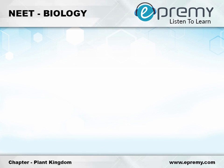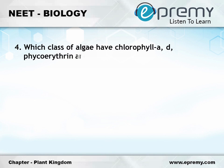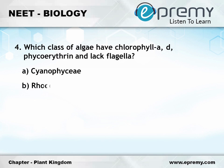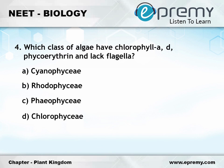Question number four: which class of algae have chlorophyll a, d, phycoerythrin and lack flagella? Option A Cyanophyceae, option B Rhodophyceae, option C Phaeophyceae, option D Chlorophyceae. The answer is option B Rhodophyceae.